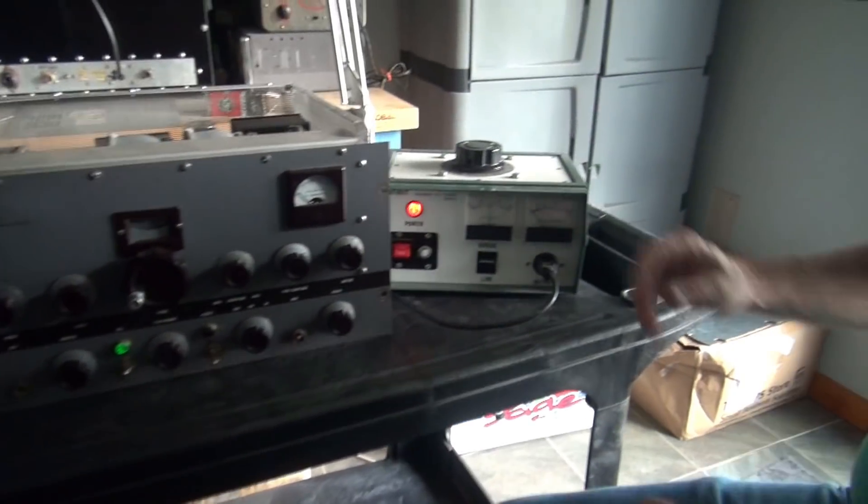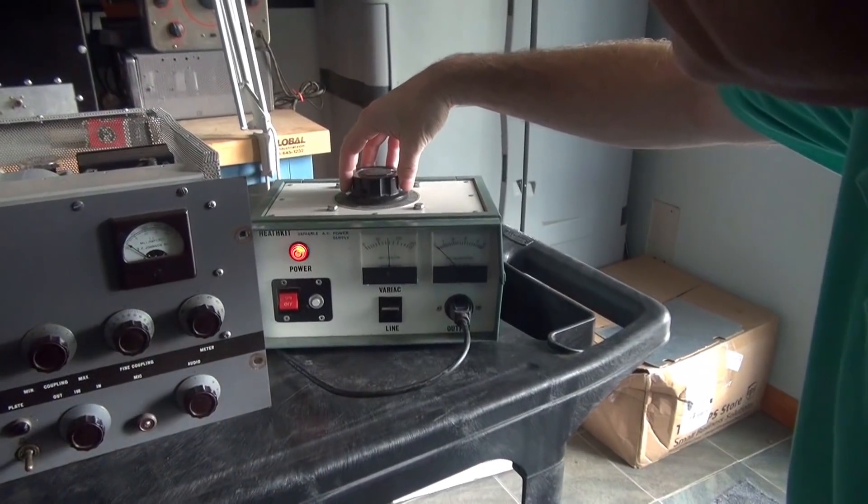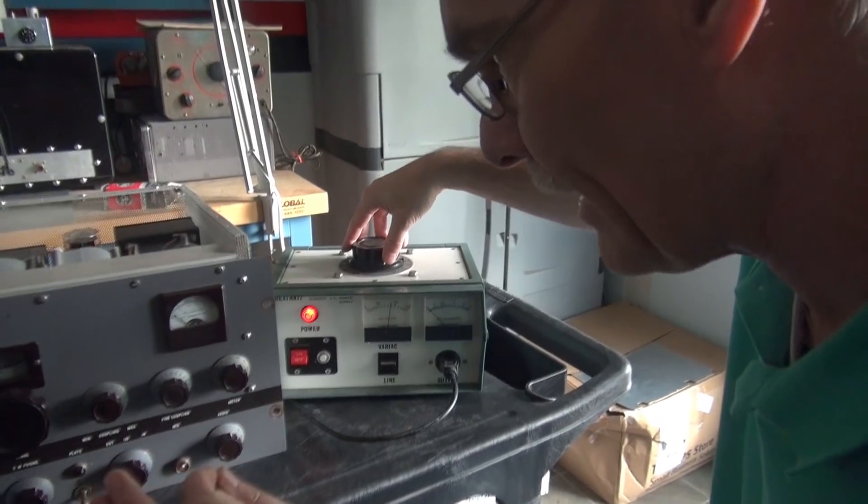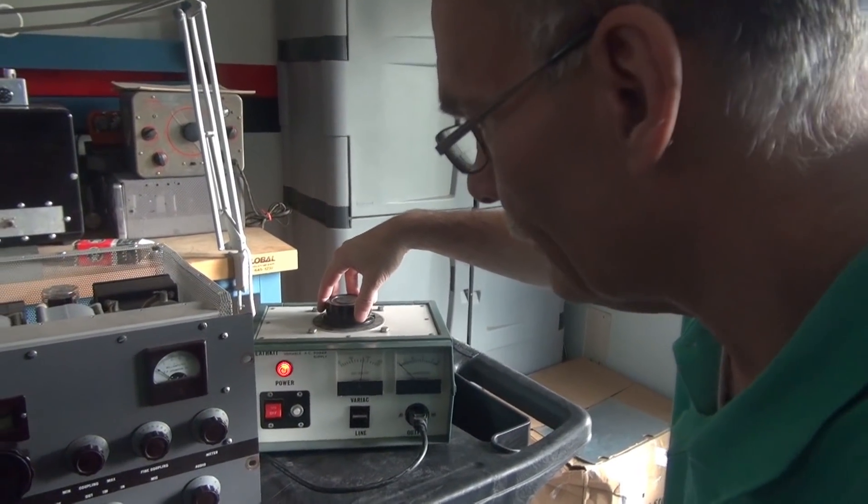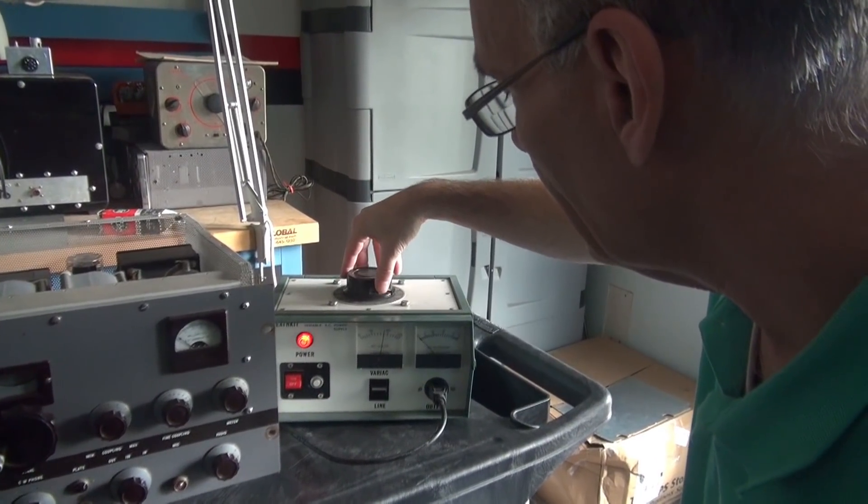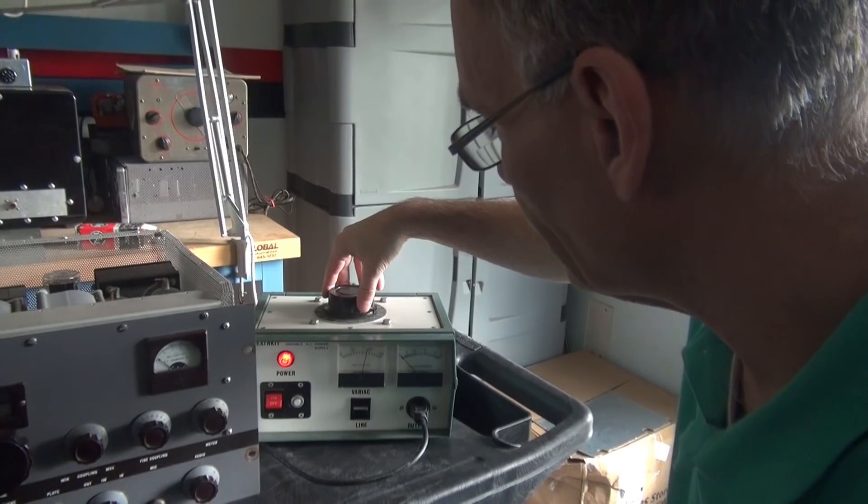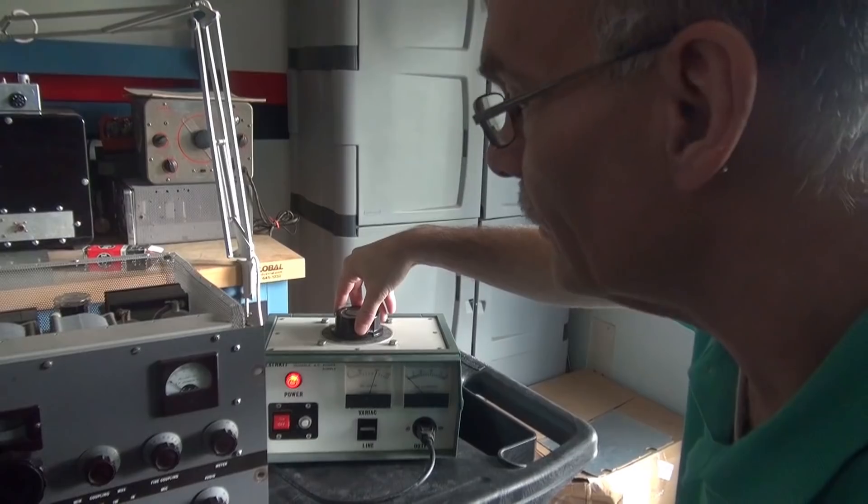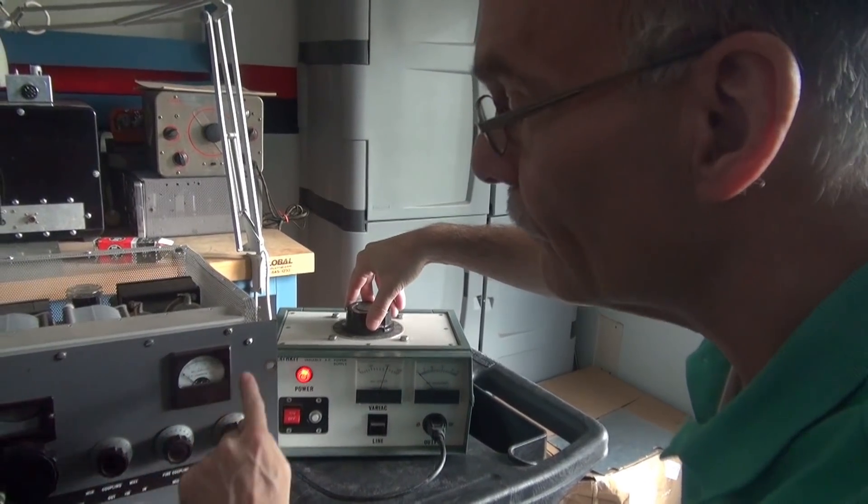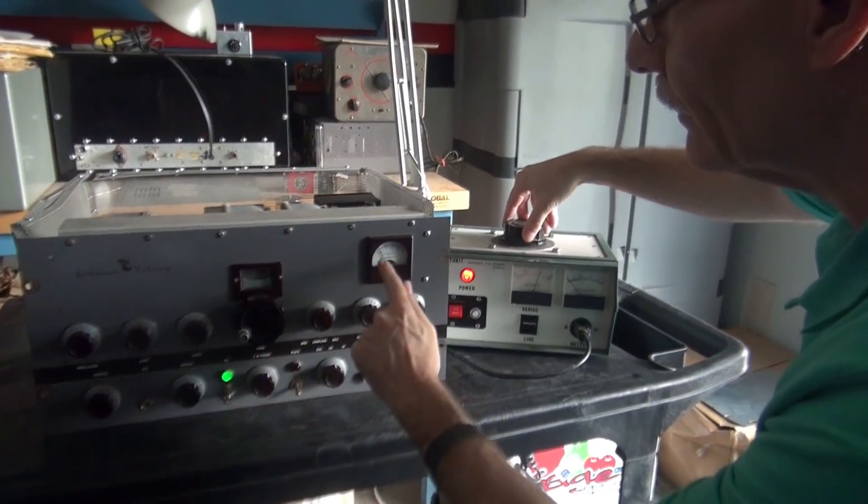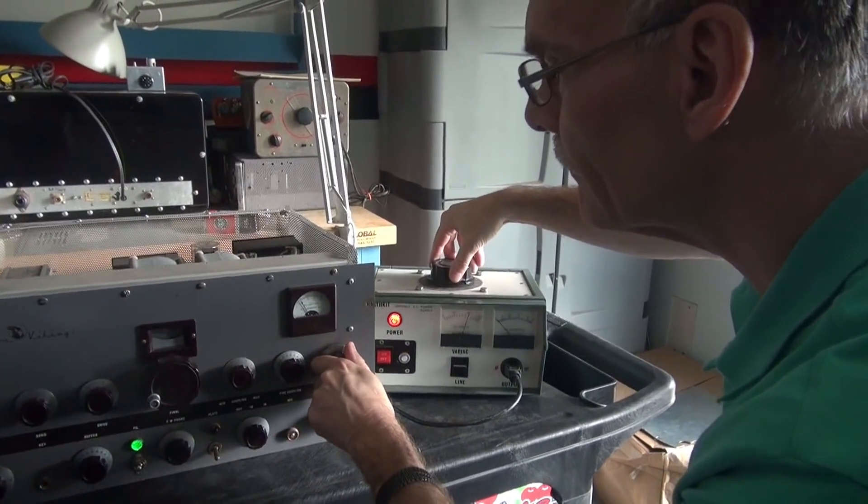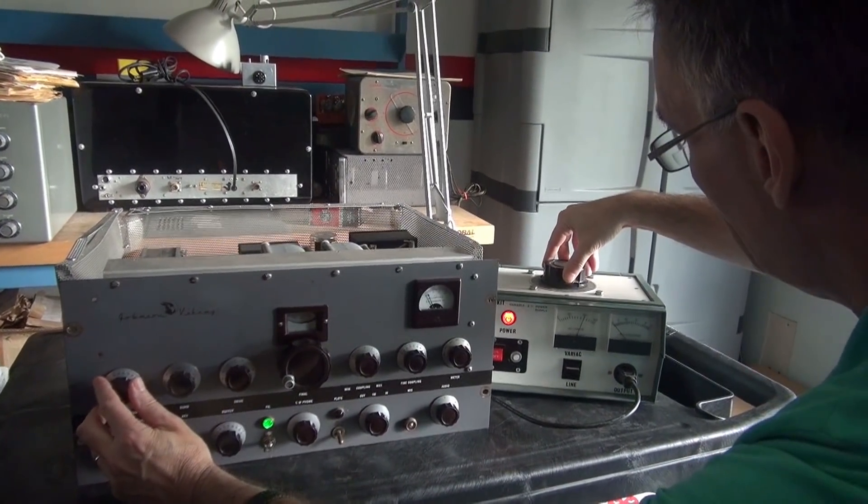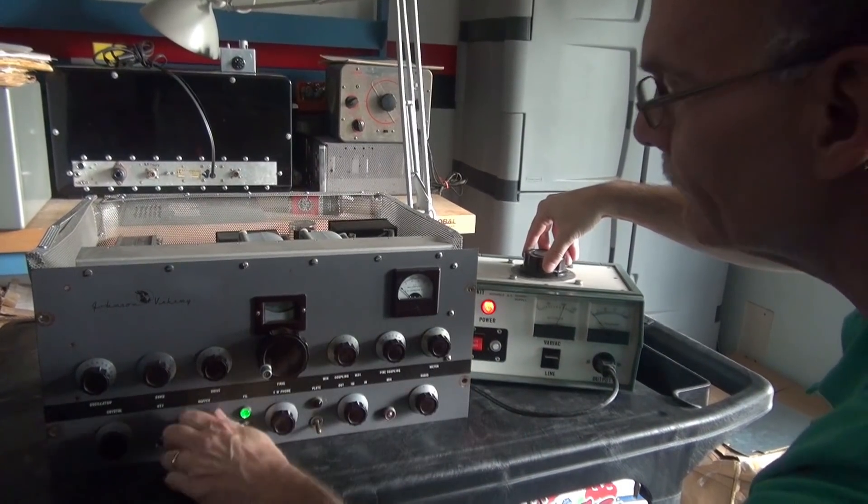Now, we did notice that inside, under the RFC choke that feeds the final output, one of the caps has a big black mark on it. So, it might not be a good idea to bring up high voltage. And with the condition of those capacitors, I don't really think it's a good idea to even leave it up in this condition. But I just want to see if we have any activity.